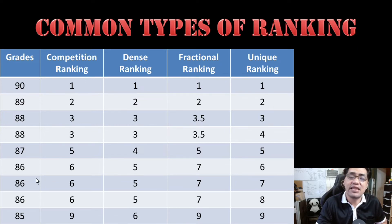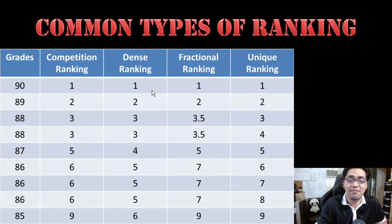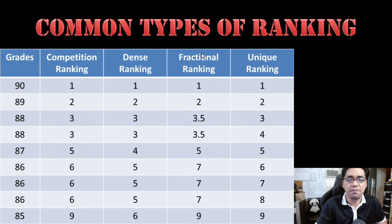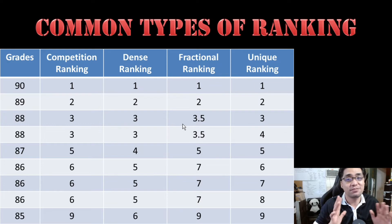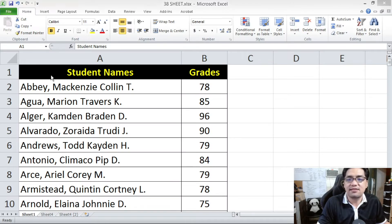In Microsoft Excel, when you do the standard rank function, what you get is the competition ranking. However, Microsoft Excel does not have an easy way to do dense ranking — unlike other programming languages which have dense ranking, it requires a bit of function manipulation or arithmetic calculation. As for fractional ranking, Microsoft Excel does have a function for it, but only in versions 2010 and above. For unique ranking, Microsoft Excel does not have a special function either — you'll need to use the COUNTIF function in conjunction with the RANK function. Now, let's start with dense ranking and how to get it.